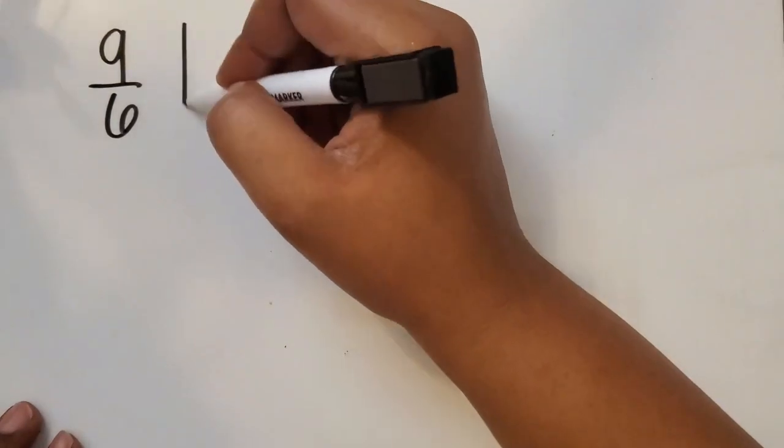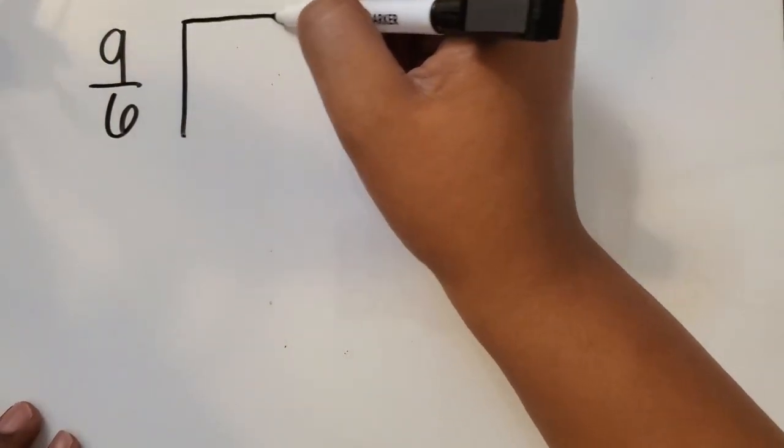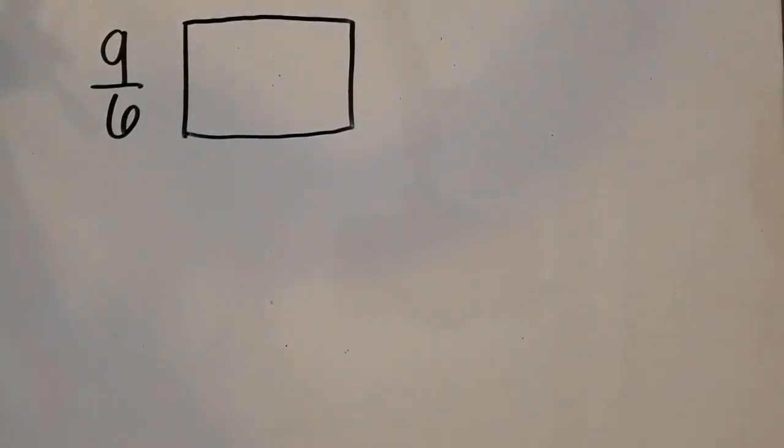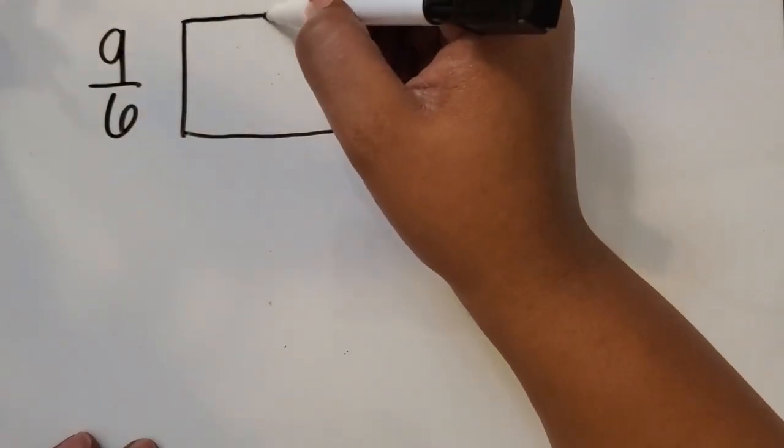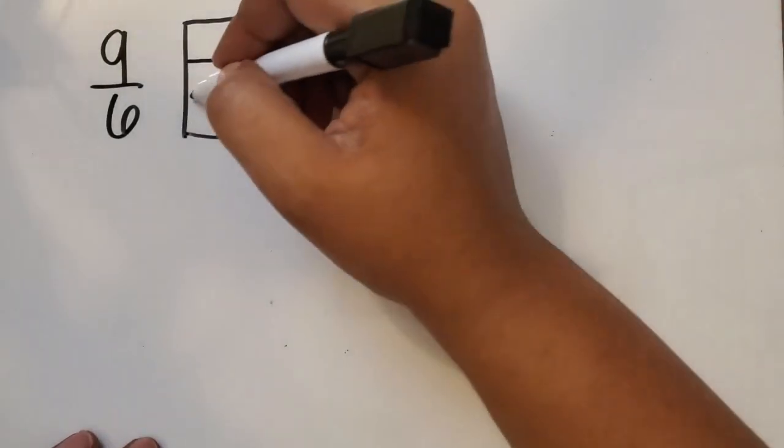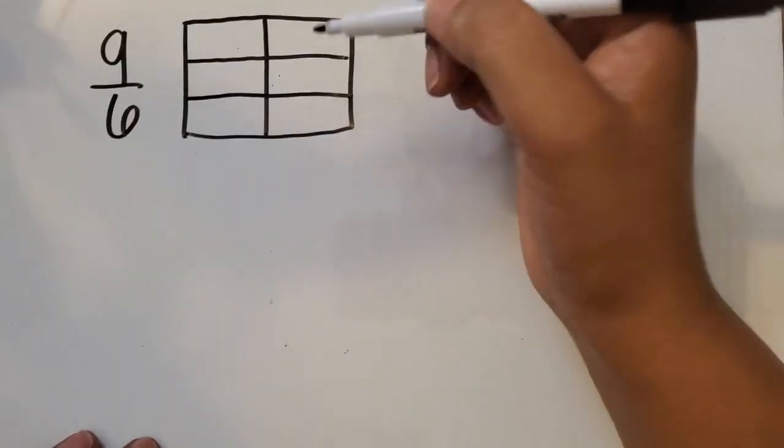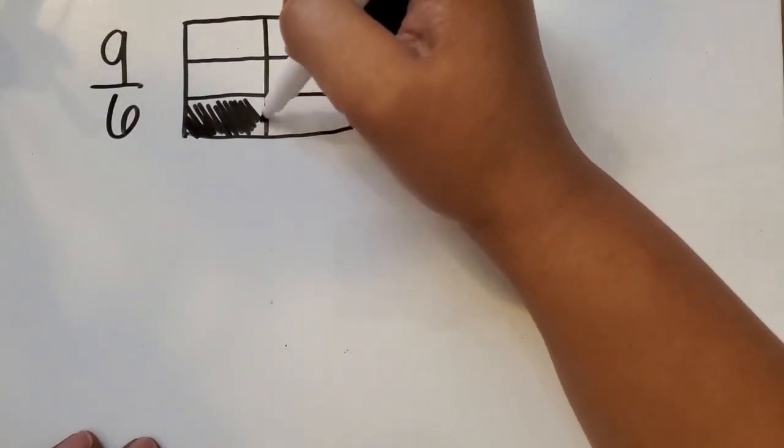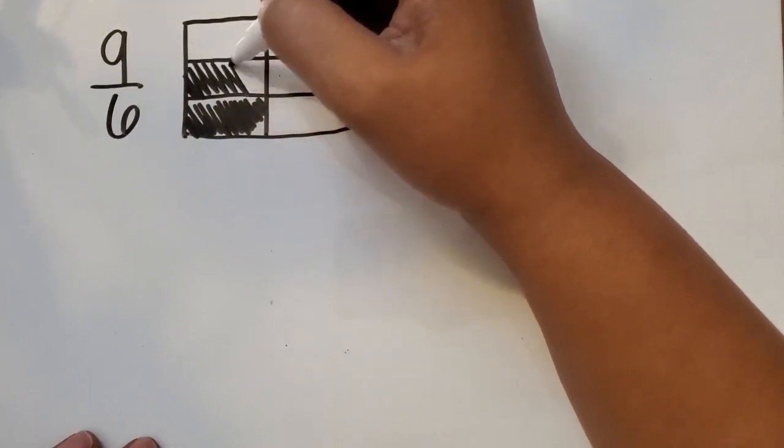So let's think about representing 9/6, and a whole. In the last example, we saw how we could partition a whole into 6 equal parts. So we're going to do that again. And I'm going to shade in 6 of those parts. We need 6/6 to fill that hole.